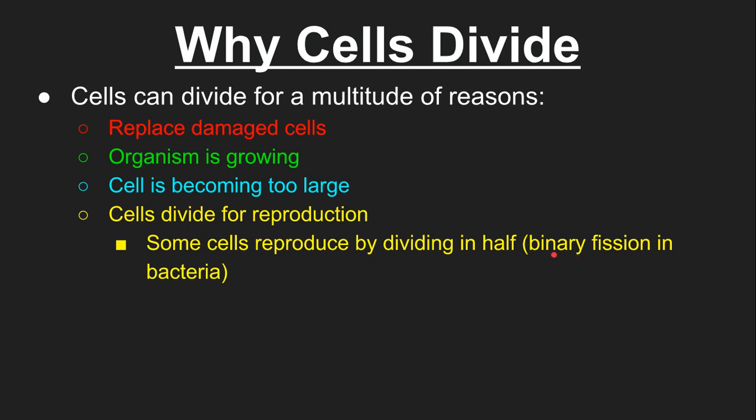The name for this process is binary fission. Fusion is bringing things together. Fission, on the other hand, is splitting things apart. So bacteria reproduce very simply. They basically just divide in half and make a new bacteria.